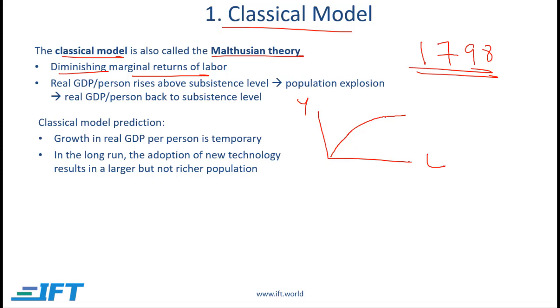Also, if we are at a given point — so we have a certain amount of labour and a certain amount of output — this would tend to be a subsistence level of output. We would have enough output to feed the population.